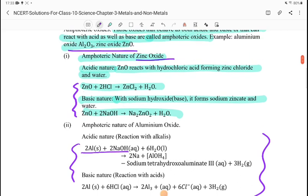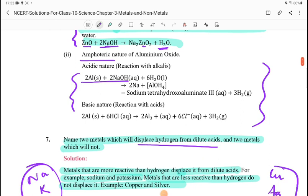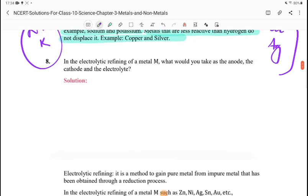The reactions are: ZnO plus 2HCl gives ZnCl2 plus H2O. ZnO plus 2NaOH gives Na2ZnO2 plus H2O. Aluminum oxide: Al2O3 plus NaOH gives 2NaAlO2 plus H2O. Al2O3 plus 6HCl gives 2AlCl3 plus 3H2O.